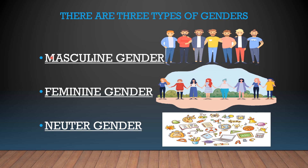The first type is masculine gender. Here you can see a group of men standing. So they belong to masculine gender. Masculine gender means a group of males is called to be the masculine gender.